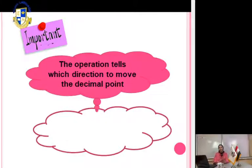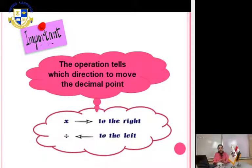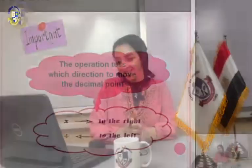As we studied before with multiplying decimal numbers: if you multiply decimals by 10, 100, or 1000, you move the decimal point to the right. But if you divide decimals by 10, 100, or 1000, you move the decimal point to the left. So: multiplying — right; dividing — left.